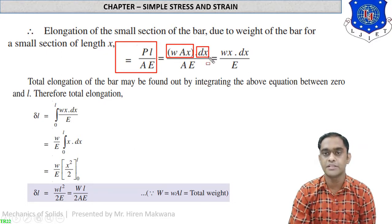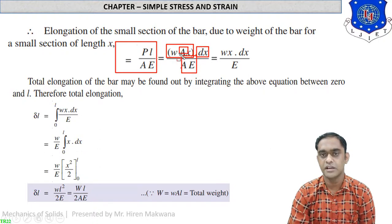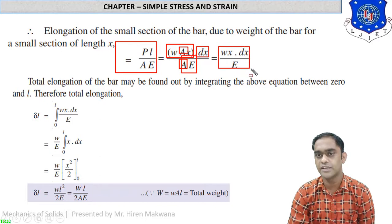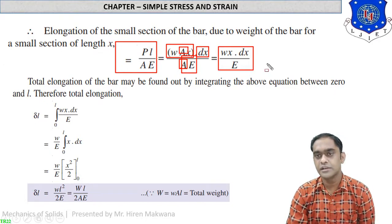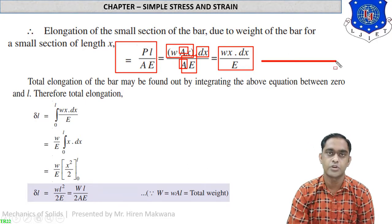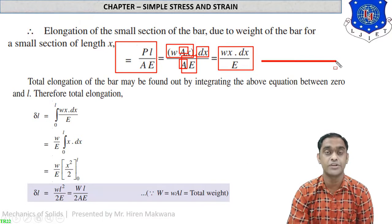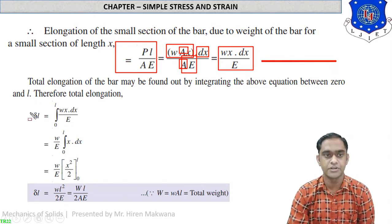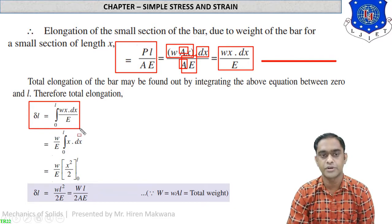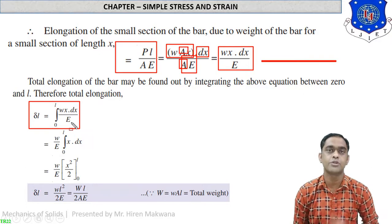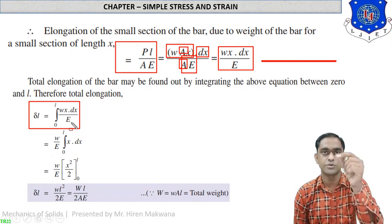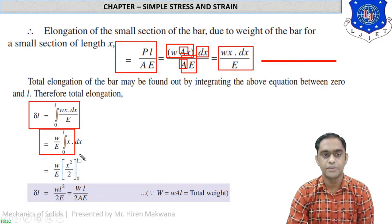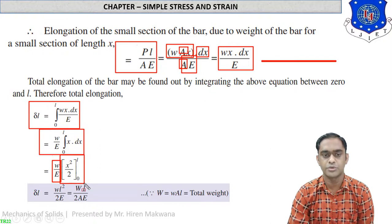Elongation of the small section: delta_l = PL / (AE) = (w × A × x × dx) / (A × E). Cross-sectional area cancels, giving delta_l = (w × x × dx) / E. To get the total elongation of the freely suspended body, integrate: delta_l = ∫₀ᴸ (w × x / E) dx = (w/E) × [x²/2]₀ᴸ = wL² / (2E).